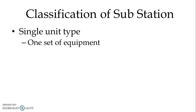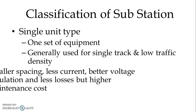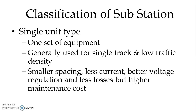In single unit type substation, only one set of equipment is used. Generally, it is used for a single track and low traffic density area. It requires smaller spacing, less current, better voltage regulation and less losses, but the maintenance cost of LV and HV switchgear is very high.